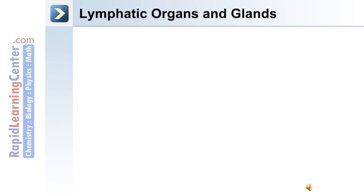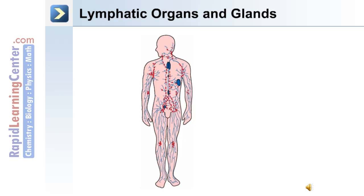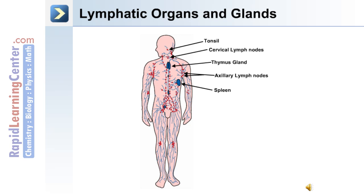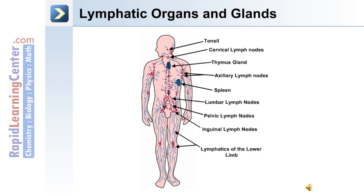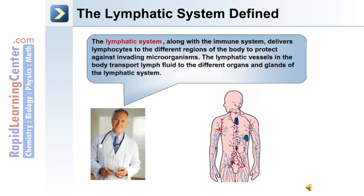The lymphatic system includes lymphatic organs and glands. Using a diagram, we can describe the major organs, glands, and vessels in the head and neck region. There are three different types of tonsils, the thymus gland, and the spleen. Collections of lymph nodes are found throughout the body: cervical, axillary, lumbar, pelvic, and inguinal lymph nodes. The lymphatic system, along with the immune system, delivers lymphocytes to different regions of the body, where these cells function to protect against invading microorganisms.